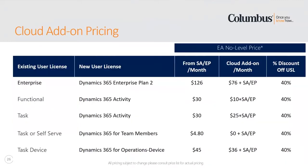Here we have the cloud add-on in the middle of the prices and the From SA option, where you give up your subscription. As you can see, there's quite a large difference in the pricing. Normally, if you calculate your maintenance — your BRAP — and put that on top of the cloud add-on, then that is cheaper compared to the From SA pricing.